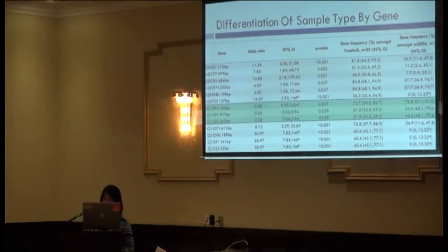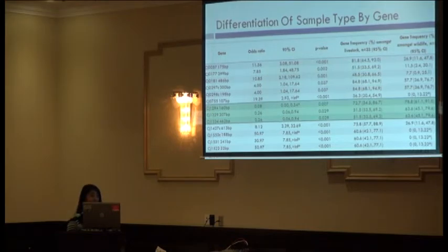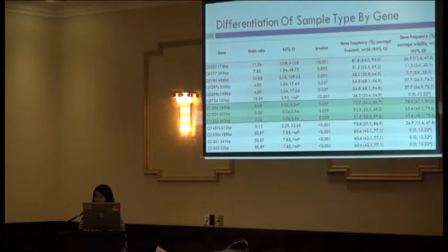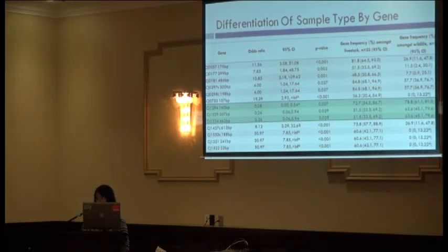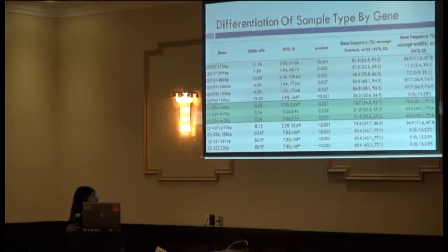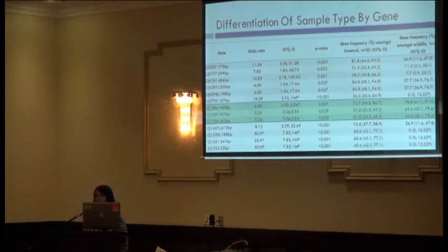Our exact logistic regression found 15 of the 40 CGF40 genes tested to be significantly associated with being a livestock or wildlife sample. The majority of these genes, the presence of them, were positively associated with being a livestock sample. The only exception is the three genes highlighted here, which were positively associated with being a wildlife sample.